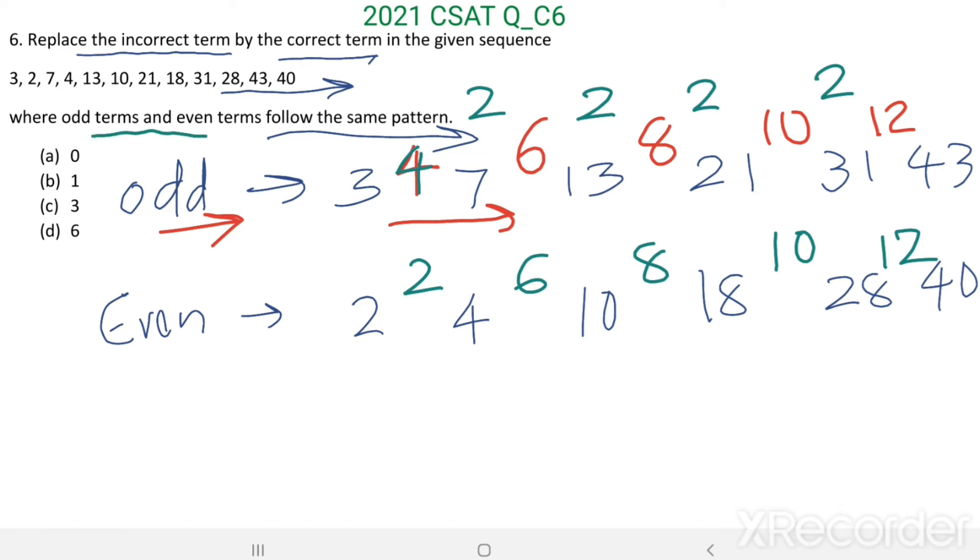Both odd terms and even terms follow the same pattern, so here also it should be the same pattern. But here instead of 4 it is 2, so to make this as 4, here it should be 0. 4 minus 0 equals 4.